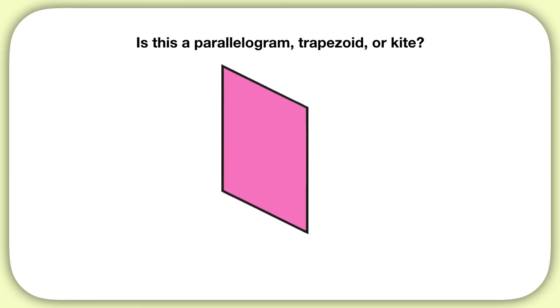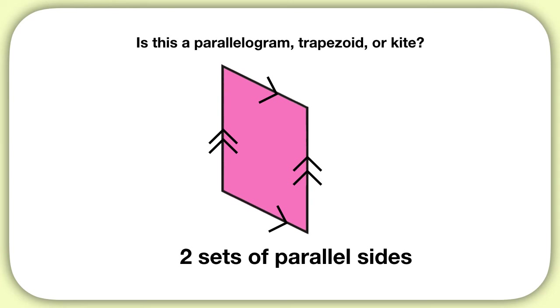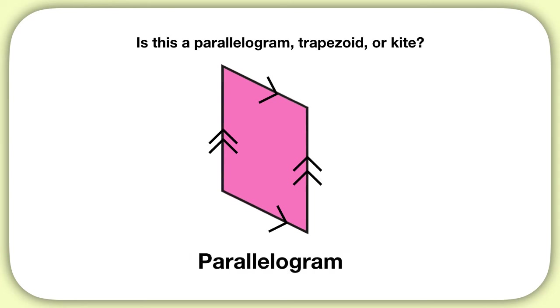Now it's time for you to practice on your own. Is this a parallelogram, trapezoid, or kite? On this shape, these two sides are parallel, and these two sides are also parallel. Two sets of parallel sides means this is a parallelogram.